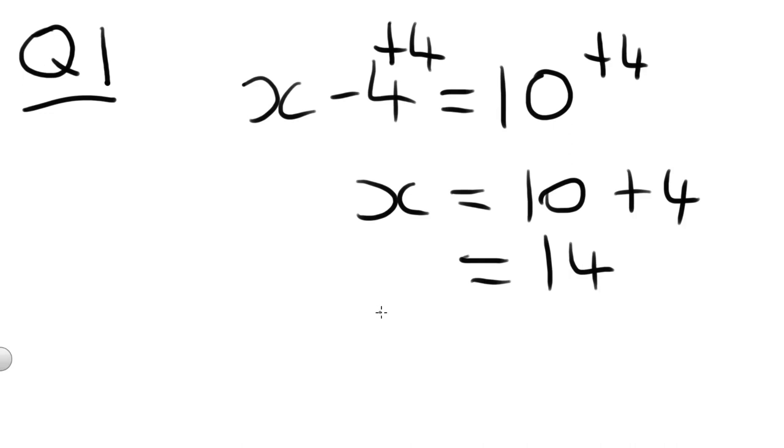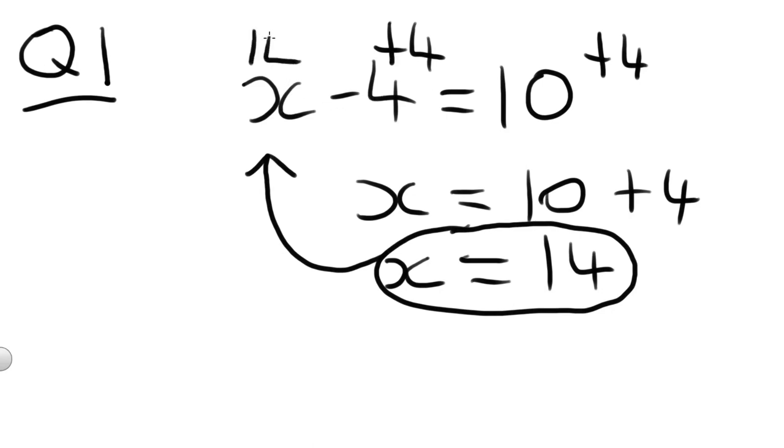Now the good thing about algebra is that whenever we get an answer, we can immediately check it. You can always know if you're right or wrong. So here we have X equals 14. Let's check that answer by putting it back into our original equation. So X minus 4 equals 10. 14 minus 4 equals 10. That's right. So we know that's right. You can check yourself.